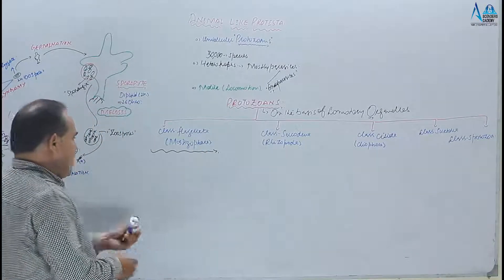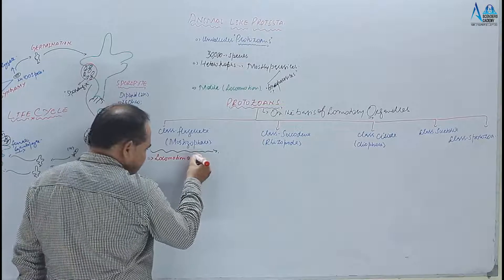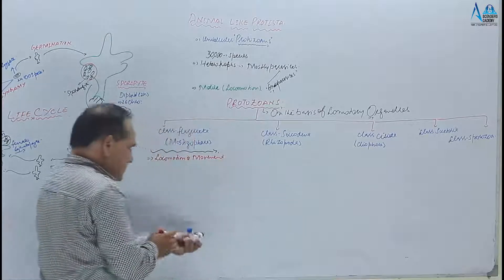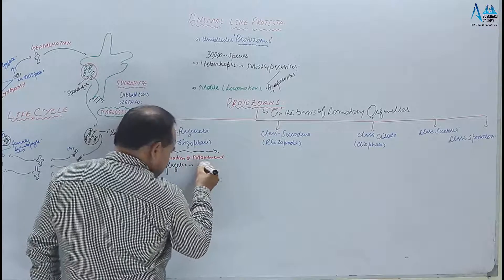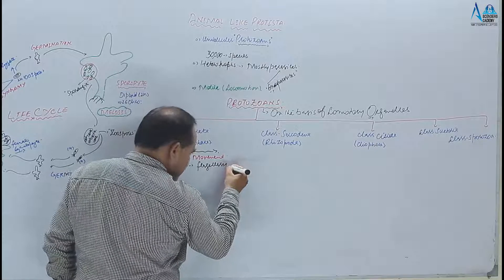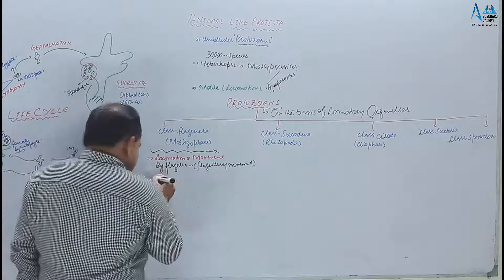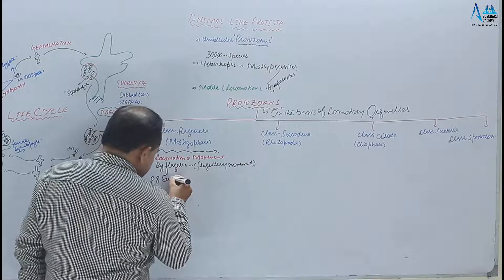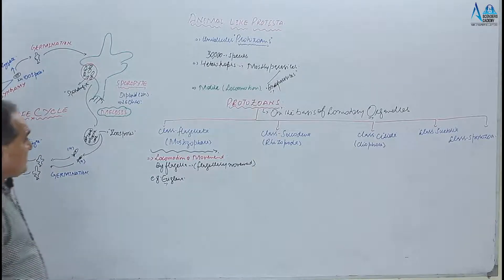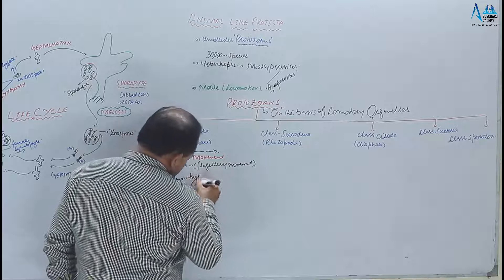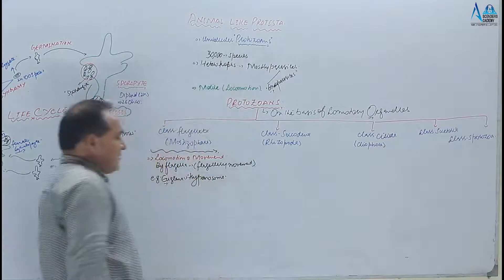Class Flagellata mein locomotion and movement that is by the flagella — jise flagellary movement ya locomotion kehte hain. Is class mein most common example Euglena hai, jo plant-like aur animal-like protista ka typical example hai. Doosra most common example Trypanosoma hai.